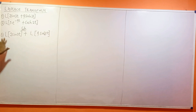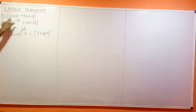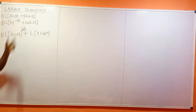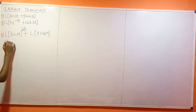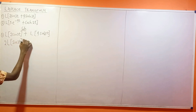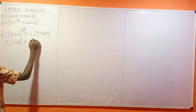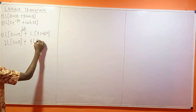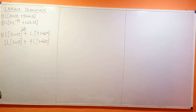This is showing that the Laplace transform of a sum is the individual Laplace transforms of the two functions. The 2 is a constant so we can take it outside, giving us 2 times the Laplace transform of sin(3t), then plus 4 times the Laplace transform of sin(3t).